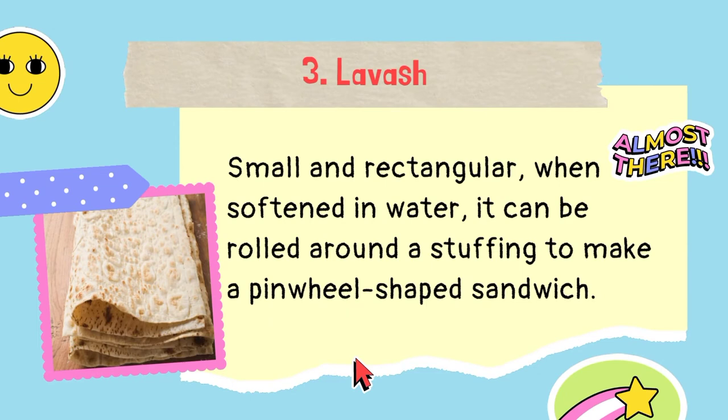3. Lavash — small and rectangular. When softened in water, it can be rolled around a stuffing to make a pinwheel-shaped sandwich.